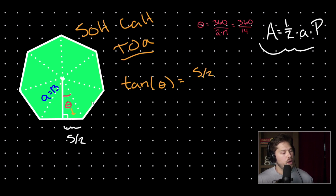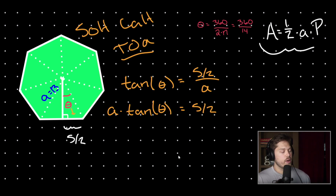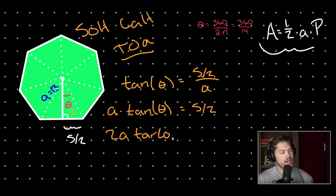We know that tangent of theta equals the opposite side, s over 2, divided by our adjacent side, our apothem. So the length of our side is going to equal our apothem times our tangent — this equals s divided by 2. Multiplying both sides by 2, we get: 2 times our apothem times tangent of theta equals our side length.